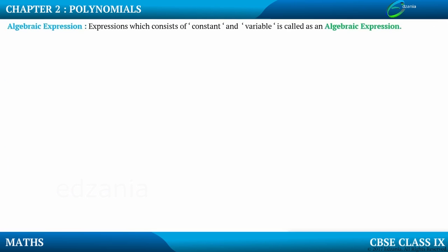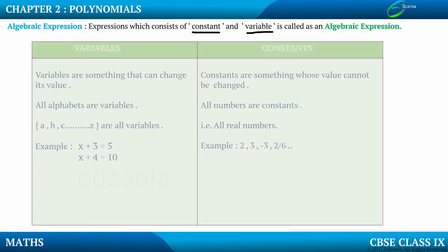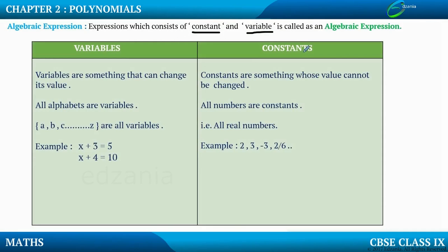What are Algebraic Expressions? An expression which consists of constants and variables is called an Algebraic Expression. We need to understand what is the meaning of constant and what is the meaning of variable. Let us concentrate on constant and variable first. Constants are things whose value cannot be changed. All real numbers are constants.